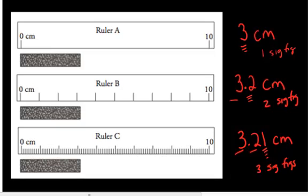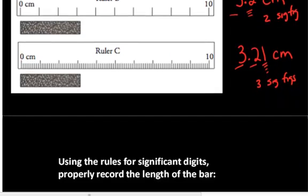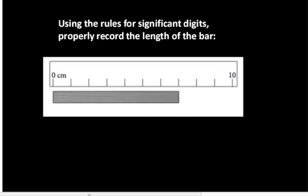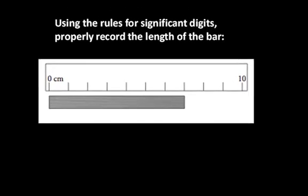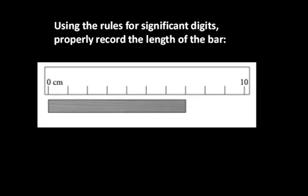It's important to understand how to correctly record measurements such that others that are looking at your data will understand the type of device that you used. Let's look at this example. Using the rules for significant digits, properly record the length of the bar. In this case, I know I can get for certain to the ones place.